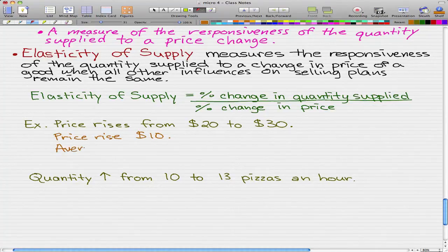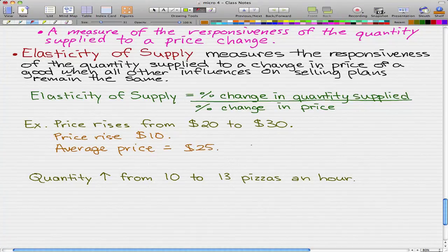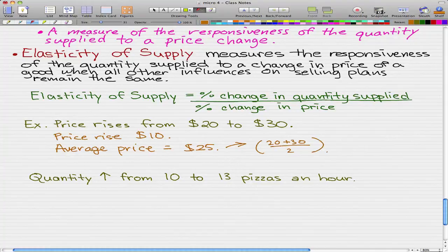Let's look at the average price. The average price for that is $25. The average is always easy to get. It's simply 20 plus 30, taking our two amounts and adding them and dividing by 2.